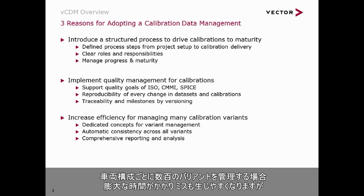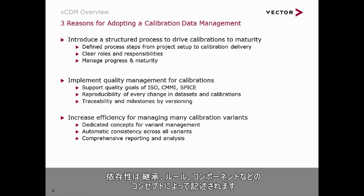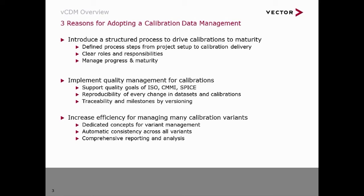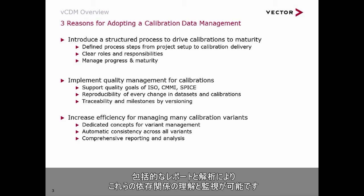Managing hundreds of variants for different vehicle configurations is as time consuming as it is error prone. A CDM system offers dedicated methods to easily manage large numbers of variants. The dependencies can be described by concepts such as inheritance, rules, and components. Parameter changes are applied automatically to the appropriate datasets, delivering automatic consistency. Comprehensive reporting and analysis assists you in understanding and monitoring these dependencies.